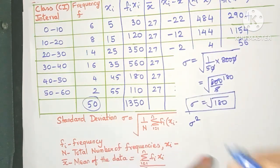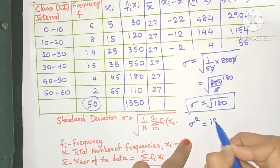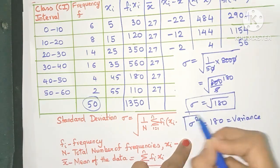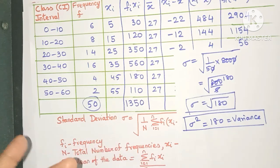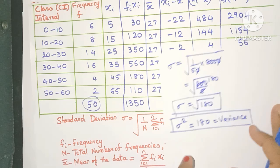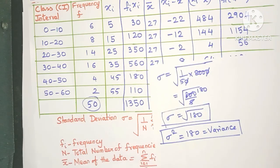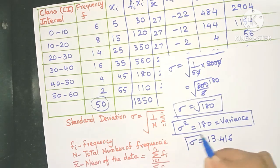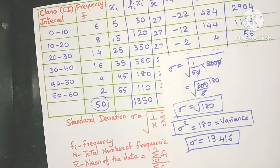Now if they are asking for the variance, remember, friends, variance is sigma square. So sigma square or the variance is 180, and that's how you will get the variance. However, here they have asked the standard deviation. So let's go ahead and find the square root of 180. You can use the long division method. So sigma is going to be 13.416. This is how you find the standard deviation for continuous frequency distribution.